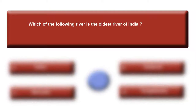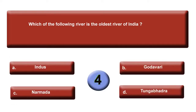Alright guys, moving quickly. Which of the following river is the oldest river of India? Your options are: option A, Indus; option B, Godavari; option C, Narmada; or option D, Tungabadra. Time is up. The oldest river of India — answer is C, Narmada.